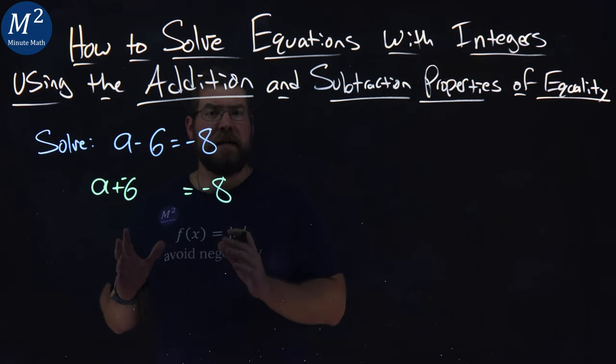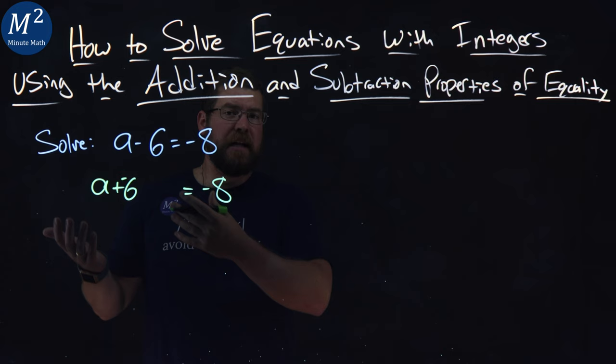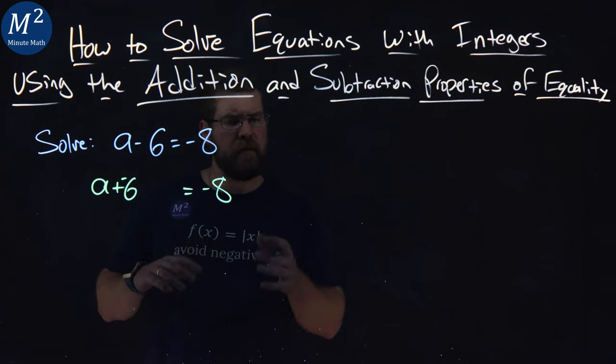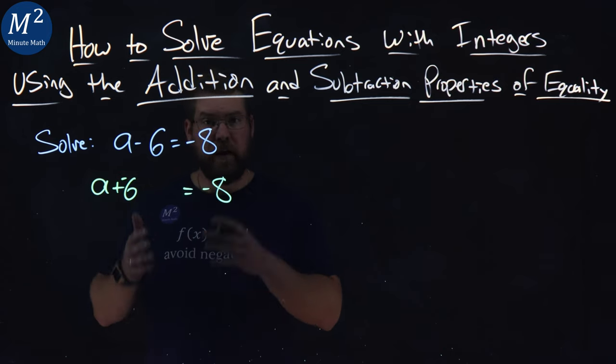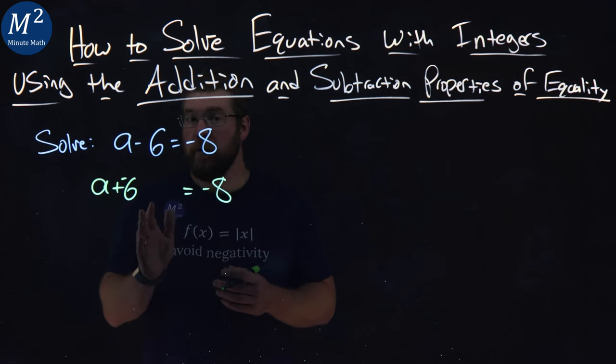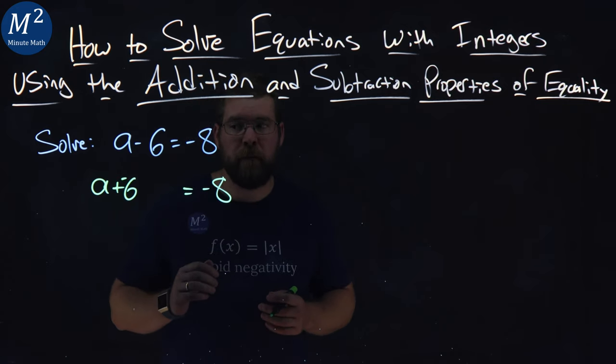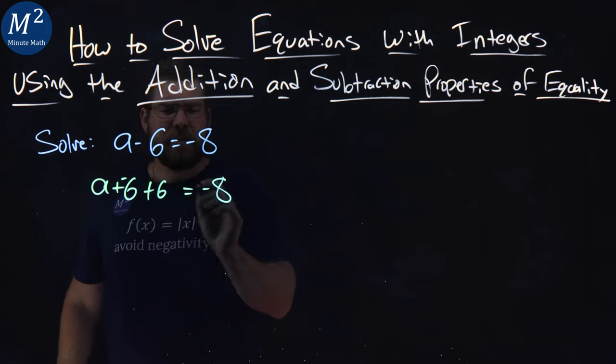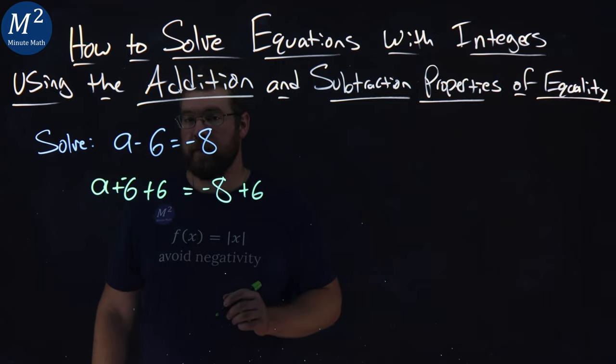If I want to get rid of that 6, I can add 6 to it and it'll disappear, right? Negative 6 plus positive 6 equals 0. The addition property of equality says I can do that if I also do it to the right-hand side. So, I'm going to add a 6 and add a 6 here to both sides.